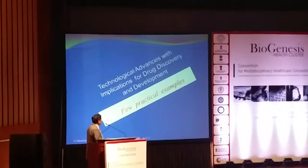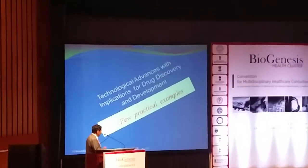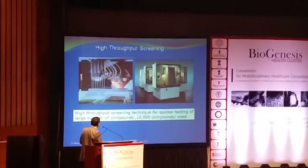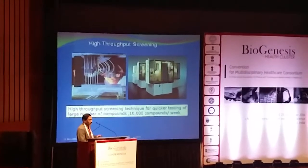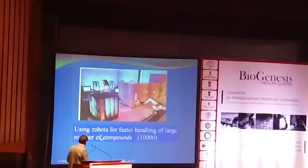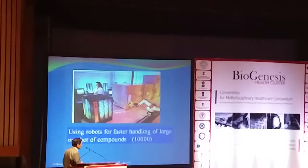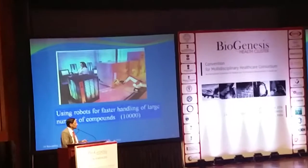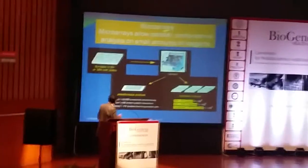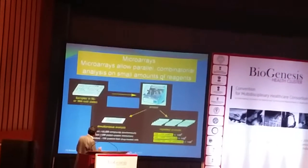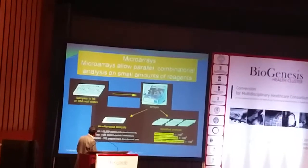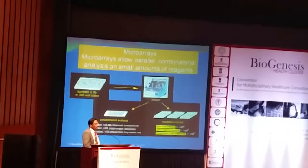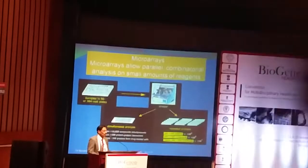Looking at practical examples of technological advancement with implications for drug discovery: in pre-clinical, we have high-throughput screening techniques for quicker trials. About 10,000 compounds can be investigated in a week. Using robotics, faster handling of large numbers of compounds is possible — more than 10,000 compounds by this technique. We also have microarray, which allows parallel computational analysis of small molecules. You can screen 10,000 compounds simultaneously, screen 100 protein-to-protein interactions, and analyze more than 100 proteins for drug-related effects.